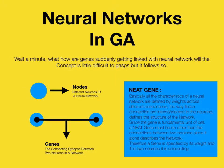I want you to stop for a minute and read the blue box, then understand what nodes and genes are. The blue circles are called nodes, or the different neurons in a neural network. The connections or synapses between two nodes are called genes. All the characteristics of a neural network are defined by the weights across different connections — to alter the behavior of a neural network, we only need to change the weights.